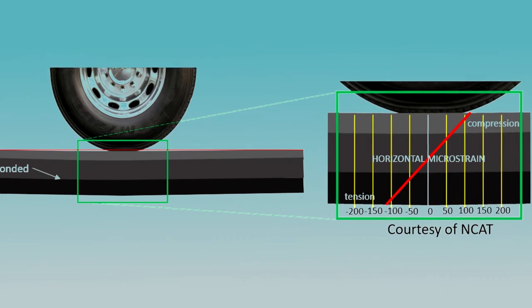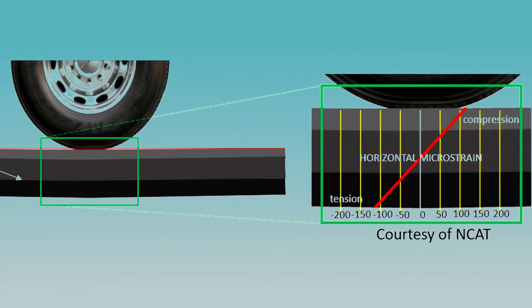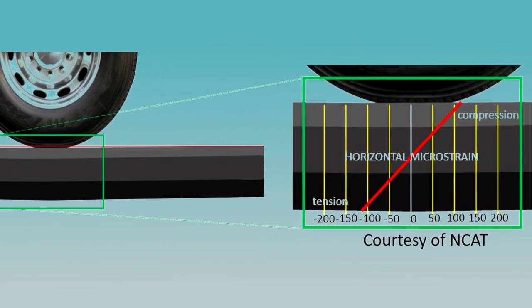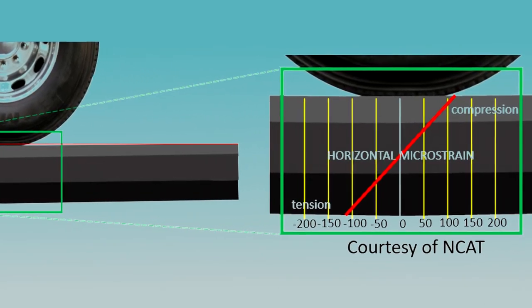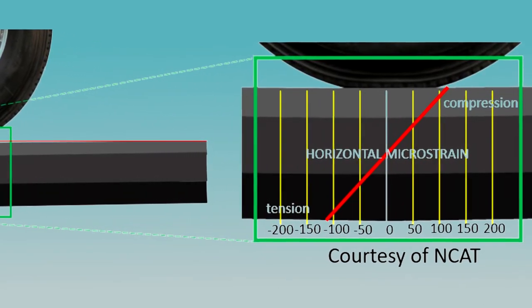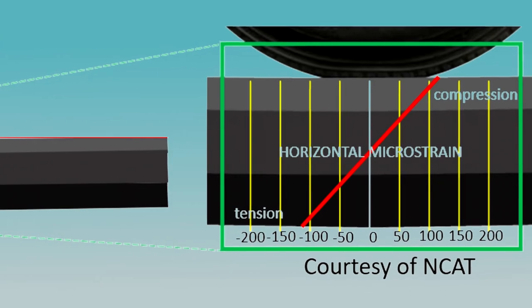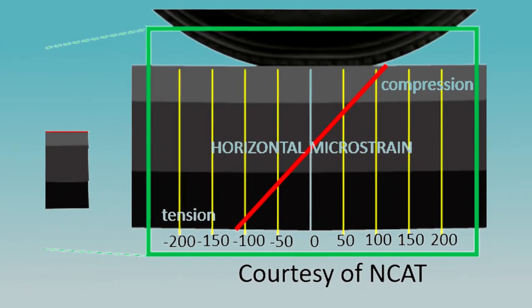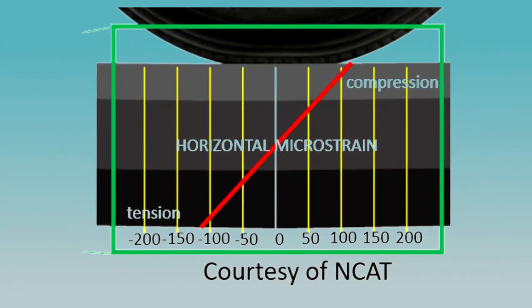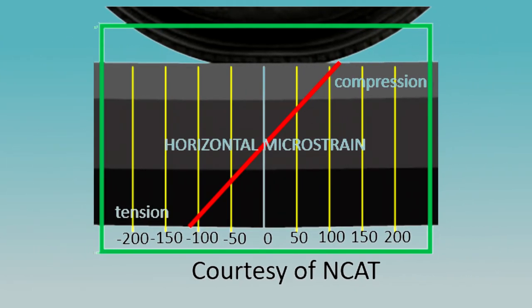Looking at a strain profile, a well-bonded roadway will have peak microstrains both in the compression and tension modes of a little more than 100 microstrains. If properly designed, a monolithic pavement structure can handle the applied loads and resulting strains.